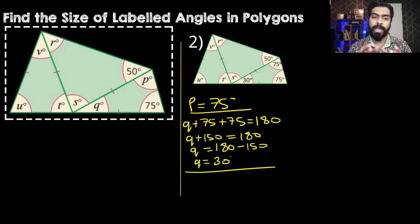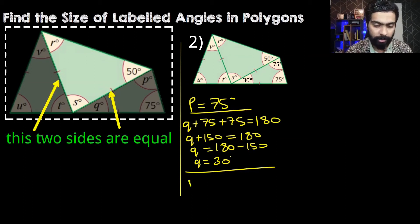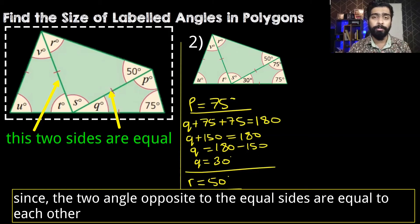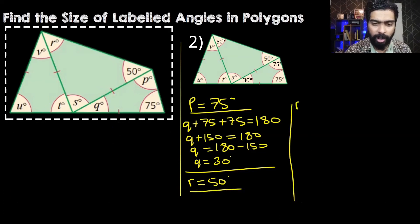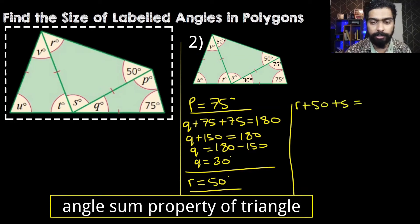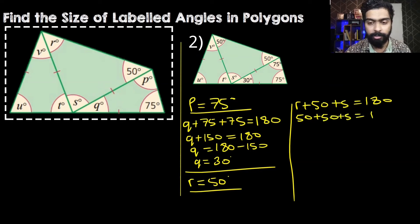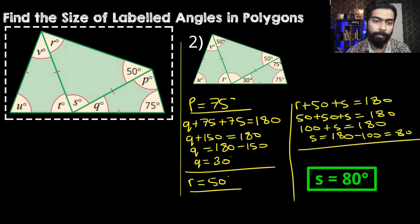For the second triangle with R, S, and 50 degrees, we use the same isosceles triangle understanding. Angle R and the 50-degree angle are equal, so R is equal to 50 degrees. Now R plus 50 degrees plus angle S equals 180 degrees. So 50 plus 50 plus S equals 180, giving us 100 plus S equals 180. Subtracting 100 from both sides, S is equal to 80 degrees.